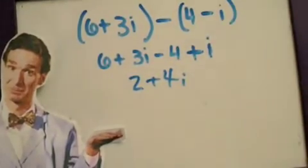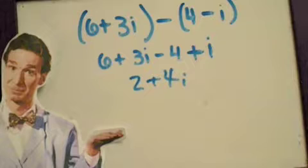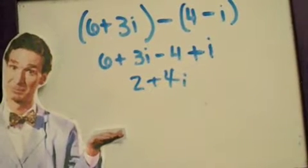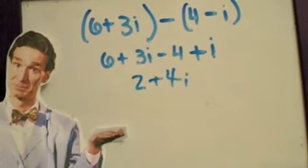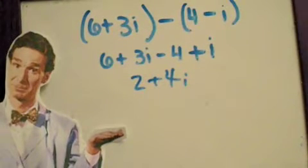When adding or subtracting complex numbers, add or subtract the like terms. For example, 6 plus 3i minus 4 minus i. Distribute the subtraction sign, add 6 and negative 4, and the 3i and i, and you end up with 2 plus 4i.